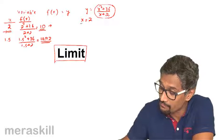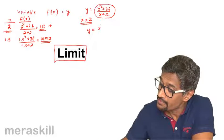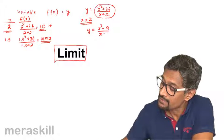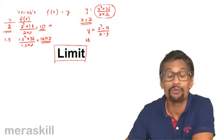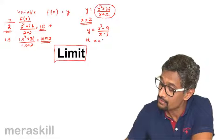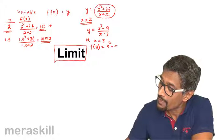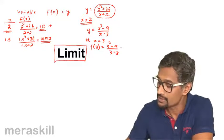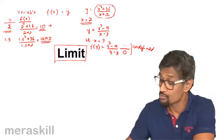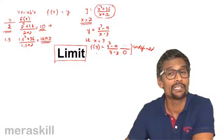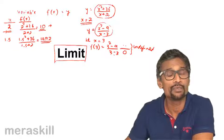But suppose you have a function like x squared minus 9 upon x minus 3. Can we do the same exercise? When x equals 3, f of 3 would be 3 squared minus 9 upon 3 minus 3, which is some value upon 0 — which is undefined, not defined at all. So in such cases the function itself is indeterminate.